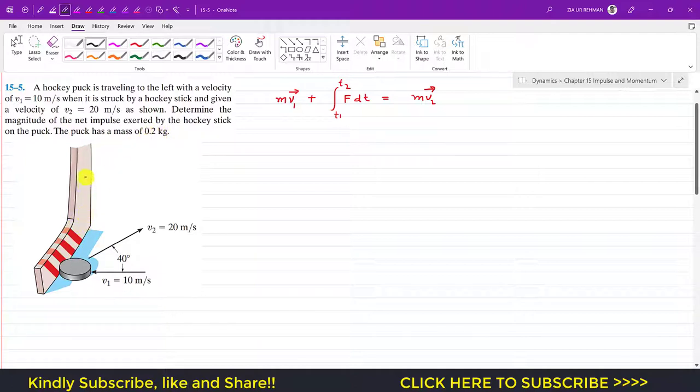So we have to find the total impulse that is transferred to the puck by this hockey head. Again, we have to use the principle of impulse and momentum. This principle says that the initial momentum plus the impulse will be equal to the final momentum of the puck.